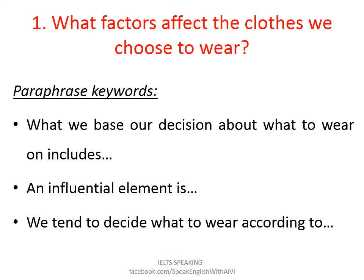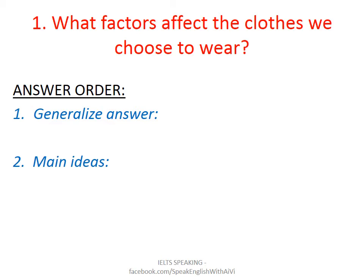So, instead of saying 'factors that affect the clothes we choose to wear', we should say 'What we base our decision about what to wear on includes...' or 'An influential element is...' or 'We tend to decide what to wear according to...' Before you go into detail, you should generalize your answer by saying 'there are several factors involved.' Remember, never count the factors that you're going to include in your answer, because you may forget one or two of them.